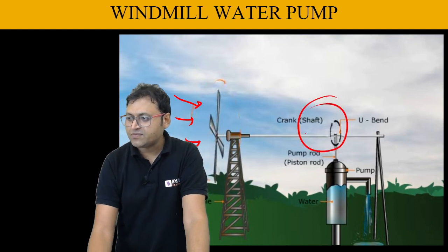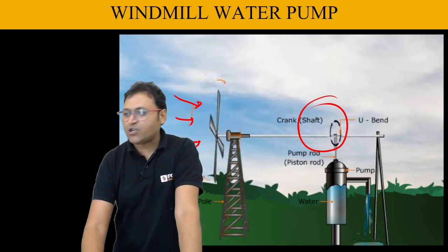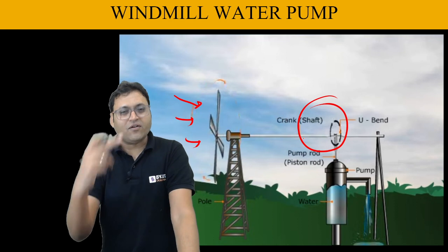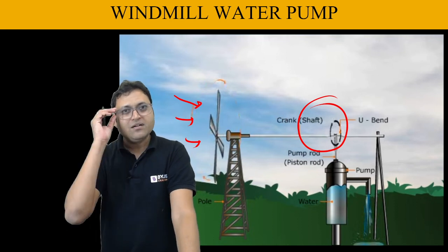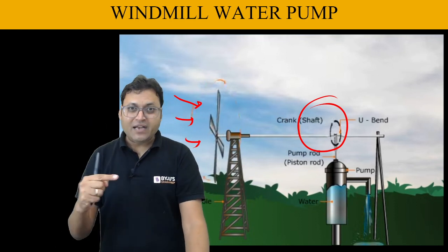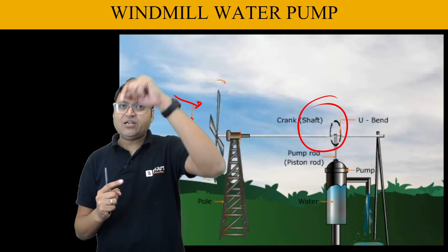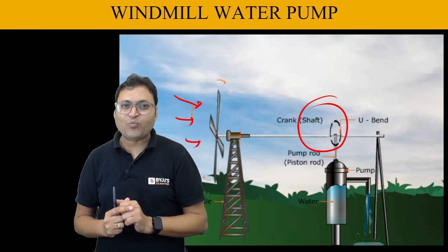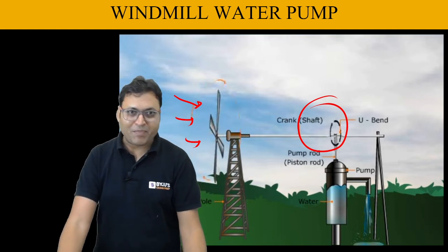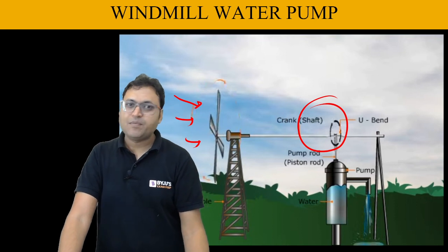You can see here there is a U-bend crank or crankshaft connected to the other end of the rotating wheel. This U-bend is connected to the pump rod or piston rod. Due to the rotation of the wheel and the U-bend, the pump rod oscillates in a to-and-fro motion, which is connected to the pump — and that is how water is delivered.